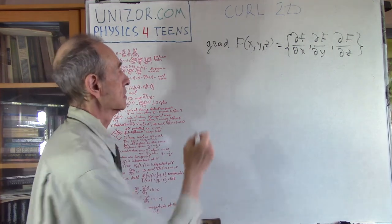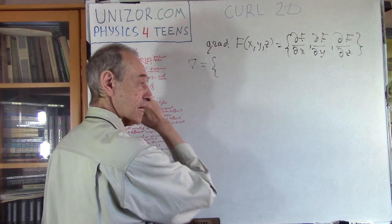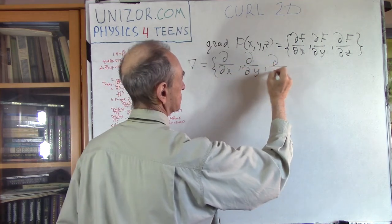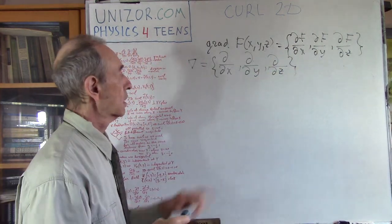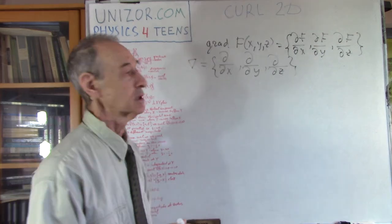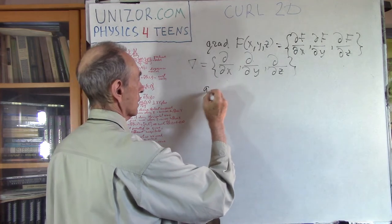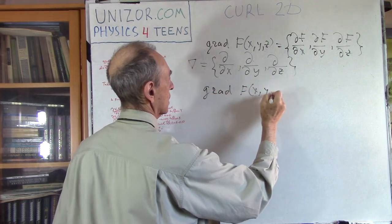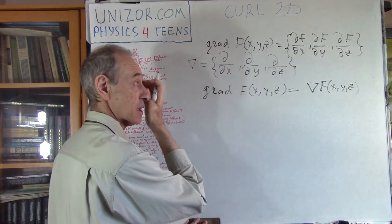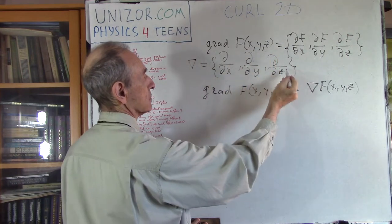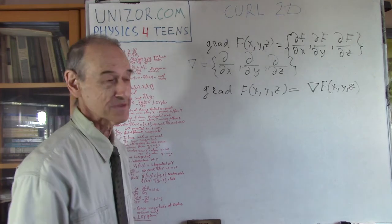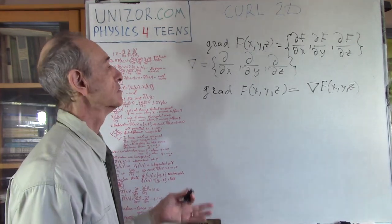We also used the symbol NABLA, which is kind of a pseudo-vector — a set of three operators of partial derivatives by corresponding coordinates. Using this symbol, we can write the gradient as NABLA times f(x, y, z). It's like multiplication, basically — if you multiply a scalar by a vector, the scalar is multiplied by each component. It's symbolic, but it's convenient.